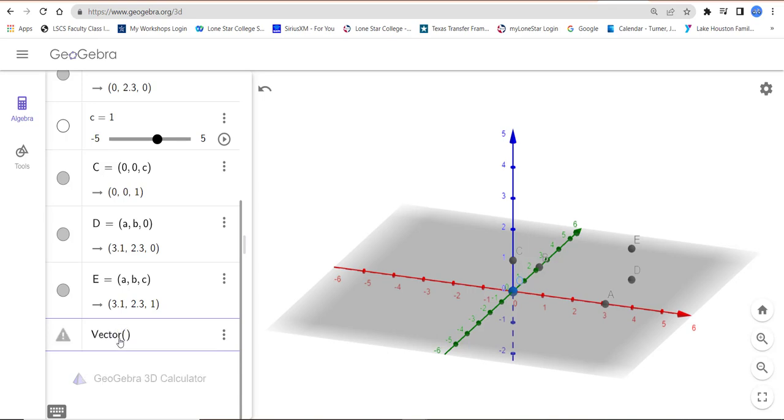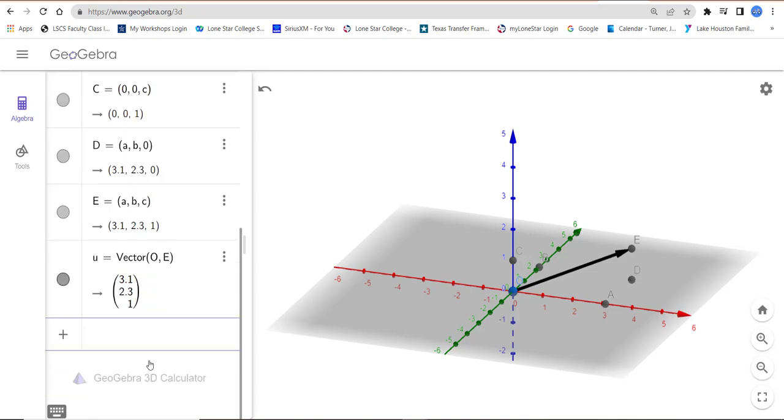It will help you fill it in. So let's see, if we go from point O, that was 0, 0, 0, up to point E, that'll give us a nice line showing a vector between those points.